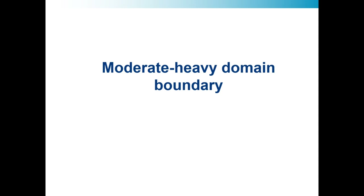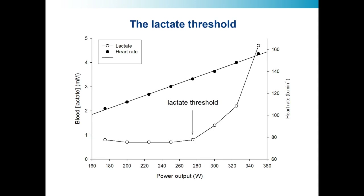The moderate-heavy domain boundary is the first thing we'll talk about, and the fundamental measure of that is what we might call the lactate threshold. Here is a plot of an exercise test with four-minute stages, increasing power output by 20 or 25 watts each stage. When you start exercise, blood lactate stays around resting level as you increase power output until you reach a point — here beyond 275 watts — where there is a sudden and sustained increase in blood lactate concentration. As you carry on increasing intensity, the lactate response accelerates, and you might also identify a lactate turn point, though you don't always see that.